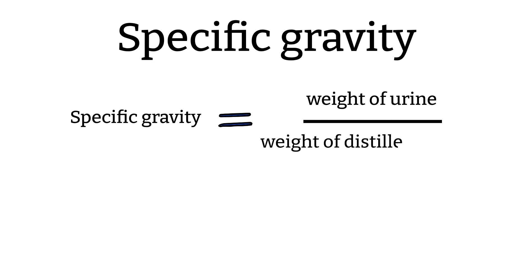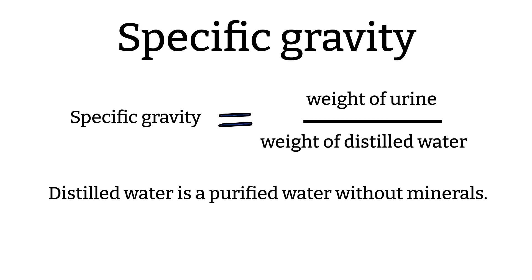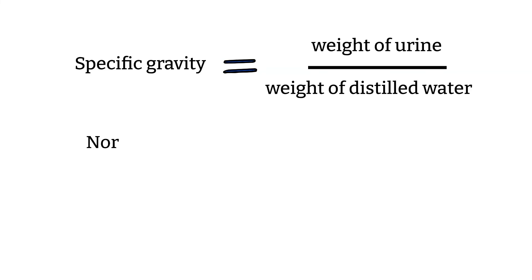The specific gravity is a test that compares the density of the urine to the density of distilled water at the same temperature. Distilled water is purified water without any minerals, while urine has other substrates that our kidney filters out besides water.